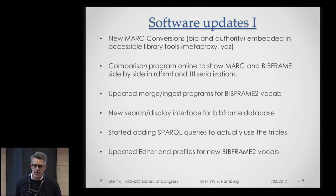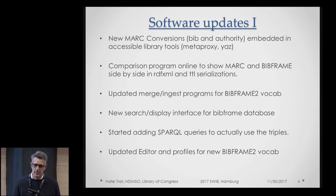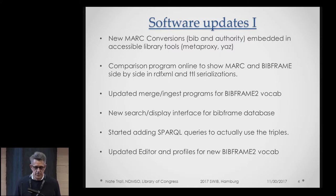The comparison service online is now updated for BibFrame 2, and we've added an authority conversion as well, so you can see what a name title authority looks like as a BibFrame work. When we ingest everything into the database, we do a merge for a bibliographic record to see if it can match to an existing work, and all the merge programs had to be updated for the new vocabulary. The BibFrame catalog we created had to have a front end, so we have a new search and display interface. We're starting to use SPARQL to augment the display. The editor itself was written for BibFrame 1, so we've modified that to handle BibFrame 2, and the profiles are also now updated for the new vocabulary.